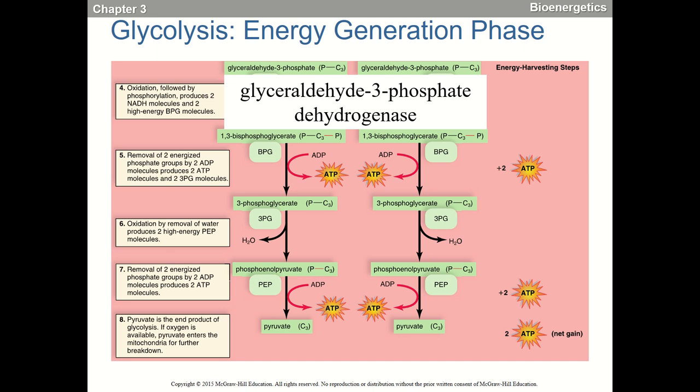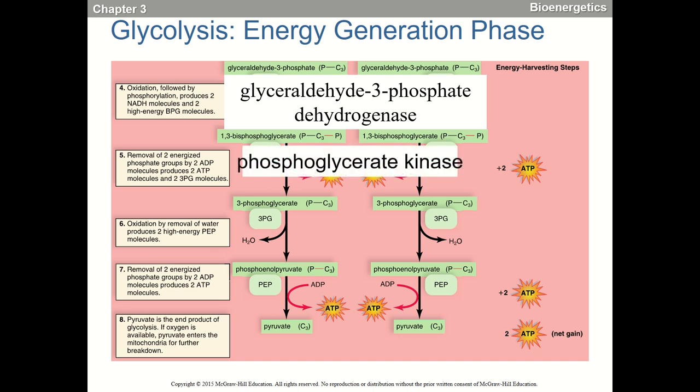Next, 1,3-bisphosphoglycerate: we take one of those phosphates off and put it onto ADP to get ATP — and since there's one on both sides, we get two ATPs at that step. That enzyme is phosphoglycerate kinase. Then from phosphoenolpyruvate to pyruvate, we get two more ATPs via pyruvate kinase.